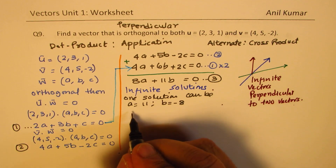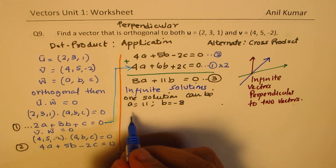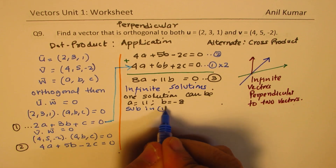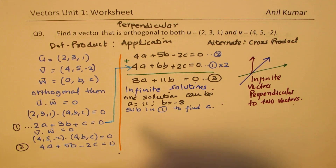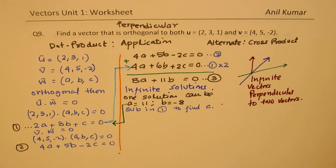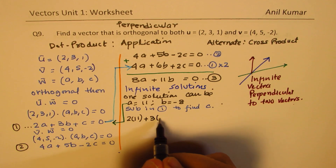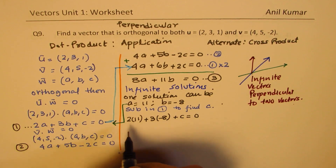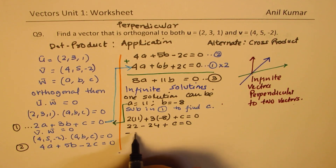Now we substitute these values into equation 1 to find c. So: 2(11) + 3(-8) + c = 0, which gives 22 - 24 + c = 0, so -2 + c = 0, meaning c = 2.